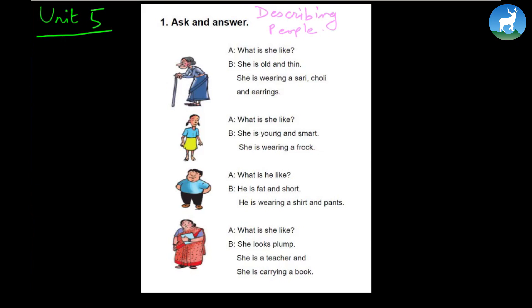What is she like? She is old and thin. She is wearing a sari, a choli and earrings. Alright, so remember the chapter name is describing people, and in this way the old lady shown here is described. What is she like? She is old and thin. She is wearing a sari, a choli and earrings.